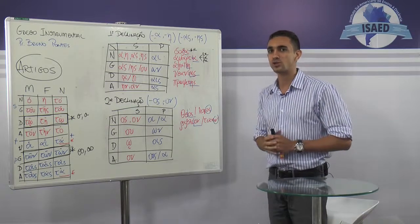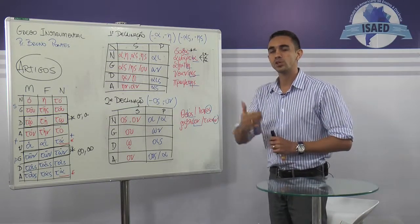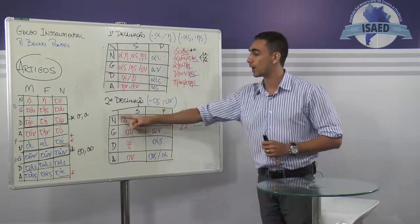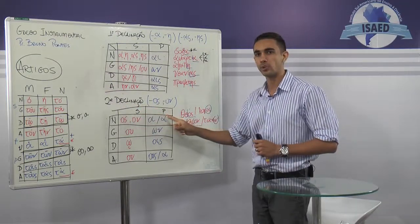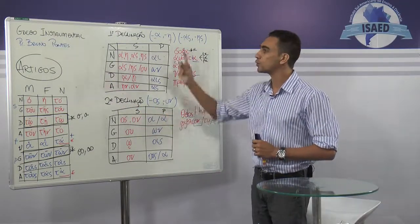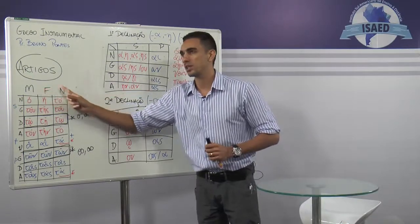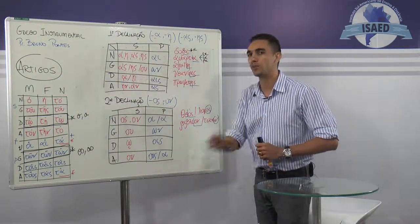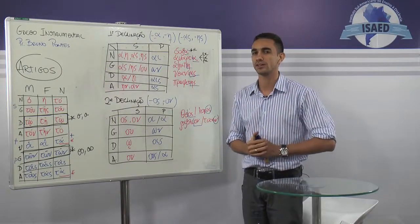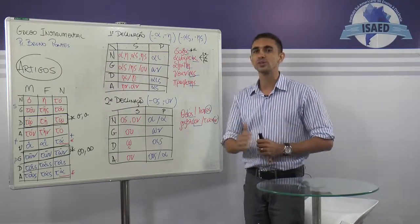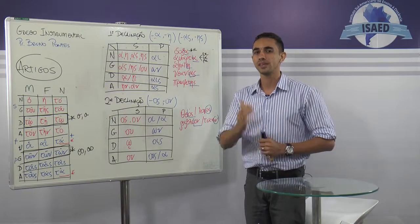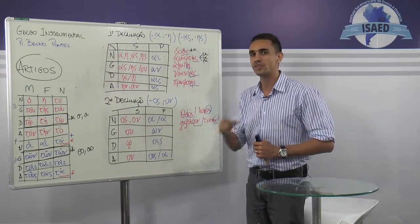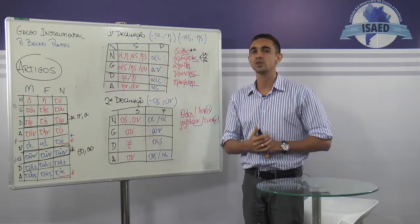Agora que você entendeu os nossos casos de declinações, pode já procurar as palavras na Bíblia dessa forma e começar a identificar: qual é o número — se é singular ou plural; qual é o gênero — se é masculino, feminino e neutro; e qual é o caso — se é nominativo, genitivo, dativo e acusativo — para todas as palavras da língua grega. Então que Deus abençoe a todos, nos encontraremos daqui a pouco, e os alunos da Isaede começam a copiar e já fazer sua própria tabelinha para começar sua tradição.